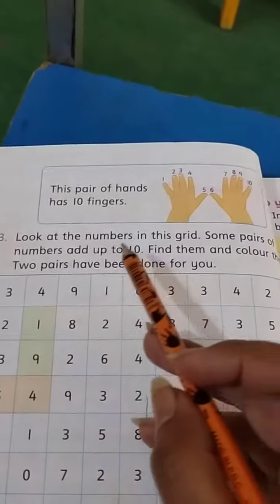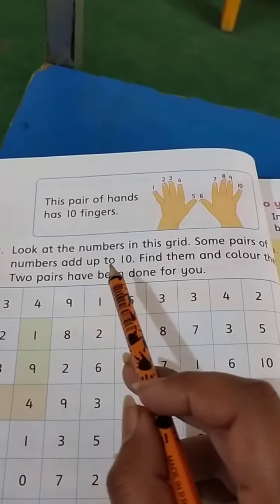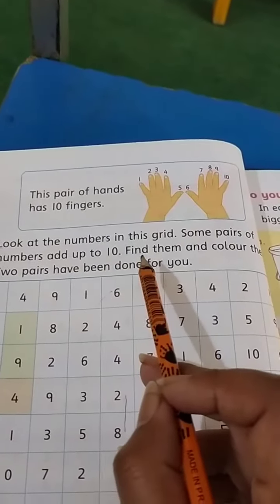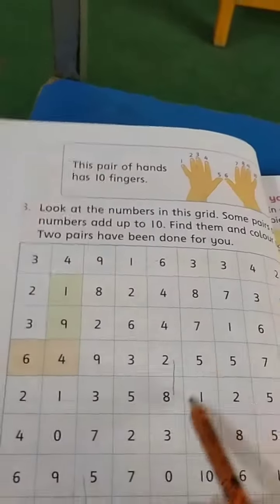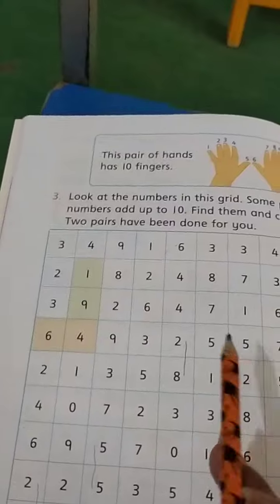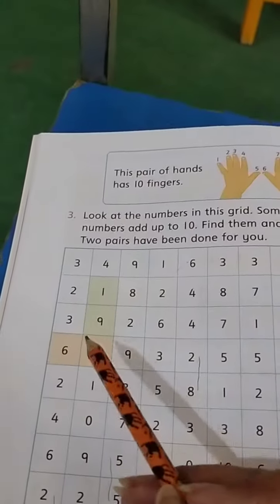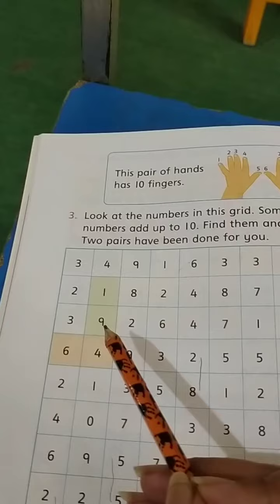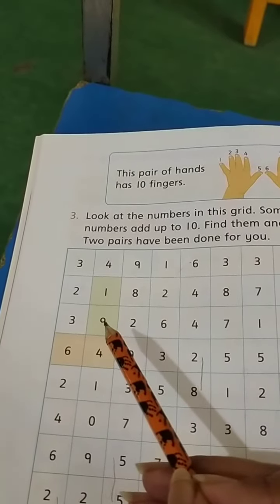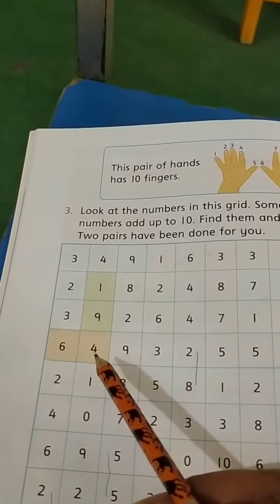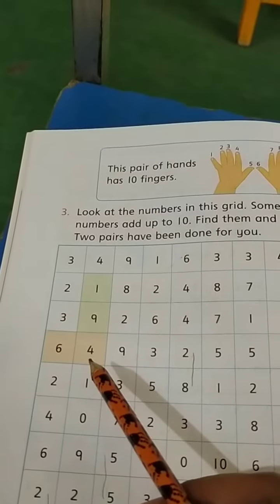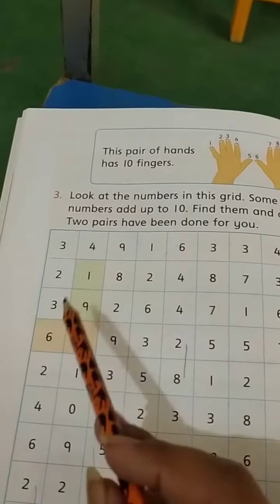So what we have to do? We have to find the numbers that add up to 10 and we have to find them and color them. Like example is given to us. 1 plus 9 is equal to 10. It gives us 10 answer. 6 plus 4 is equal to 10. So it also gives us 10 answer. So we have to color it.